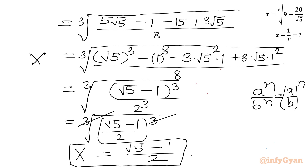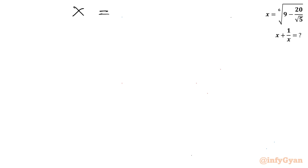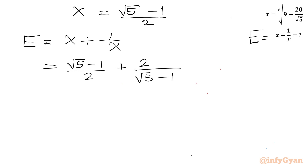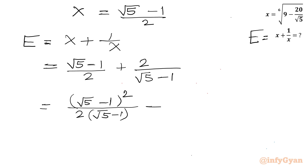Now let us calculate our expression E. With x equal to (√5 minus 1) over 2, we have E equals x plus 1 over x, which gives (√5 minus 1) over 2 plus 2 over (√5 minus 1). To make the denominators the same, I will write the common denominator as 2 times (√5 minus 1), requiring (√5 minus 1)² in the first numerator and 4 in the second numerator.